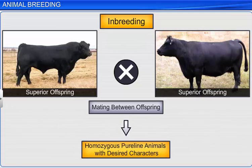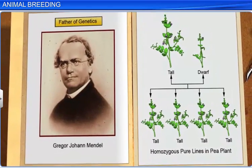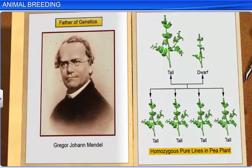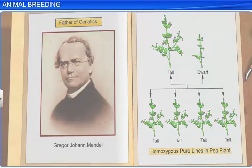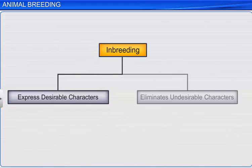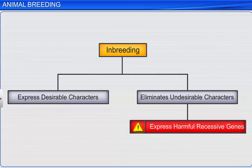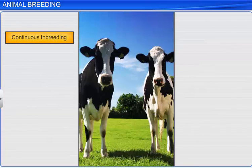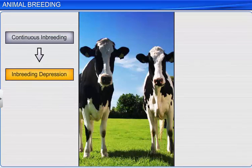This is similar to Mendel's experiment that yielded homozygous pure lines in pea plants. Inbreeding also helps in the expression of desirable characters and the elimination of undesirable characters in the offspring. However, inbreeding can increase the chance of expression of recessive genes, which are harmful. If inbreeding among closely related breeds is continued, it can result in inbreeding depression, which is reduced fertility and productivity.